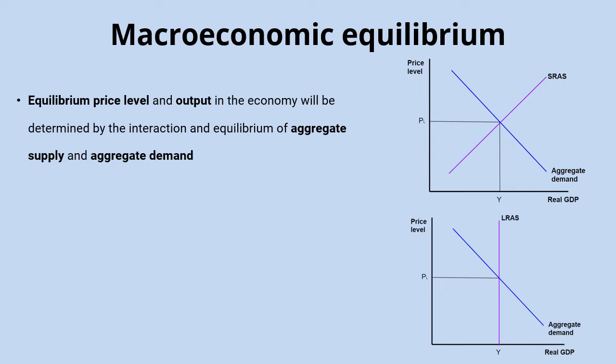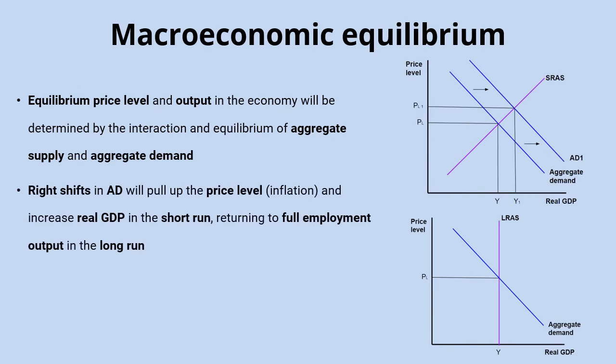Anything causing aggregate demand to shift to the right — for example, a cut in interest rates causing more consumer spending and investment — will push up both the price level, so inflation, and also real GDP in the short run.